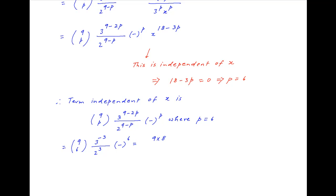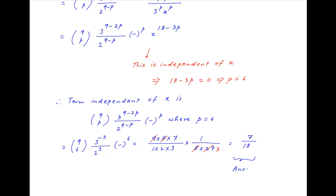This equals (9 × 8 × 7) / (1 × 2 × 3) multiplied by 1 / (8 × 27), which simplifies to 7/18, which is the required answer.